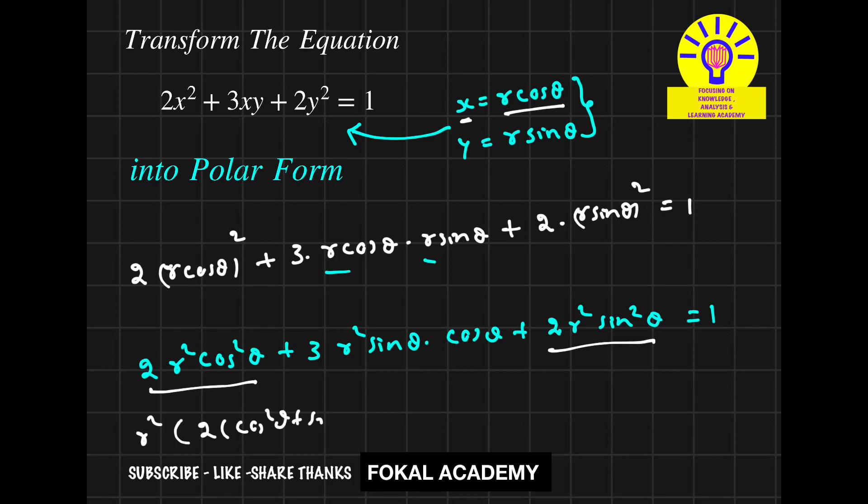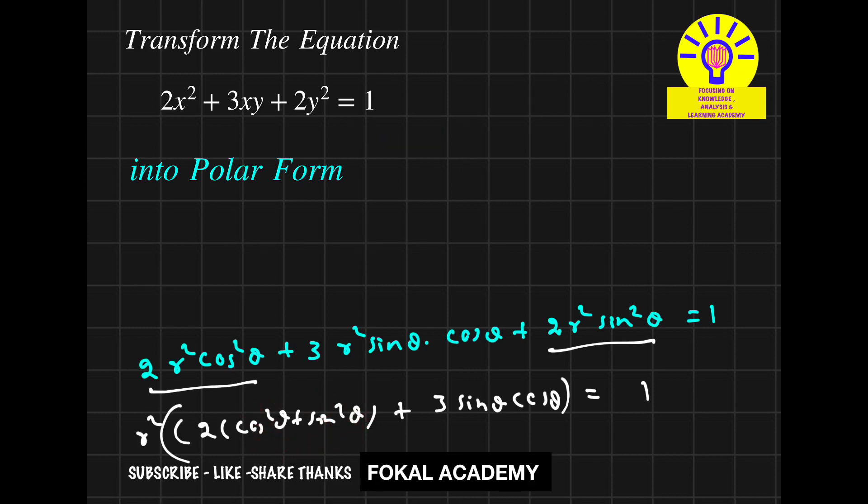That's equal to 1. So it can be written as r square into 2 into 1, this is 2 plus 3 into—so here sin θ into cos θ is there.